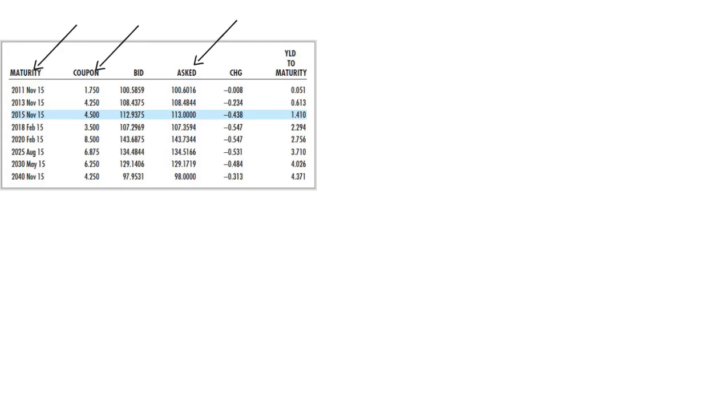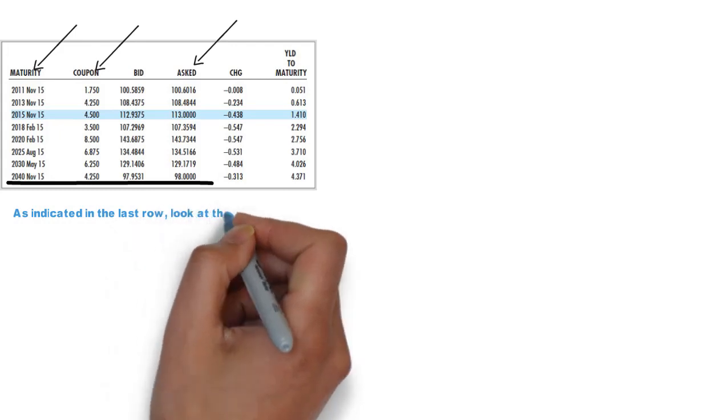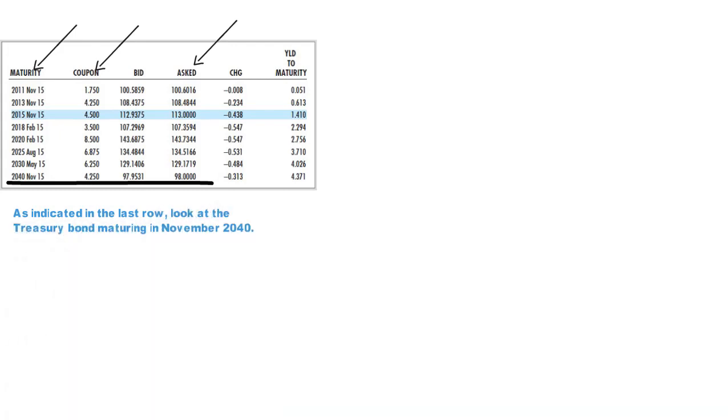Let's take a numeric example. As indicated in the last row, look at the Treasury bond maturing in November 2040.